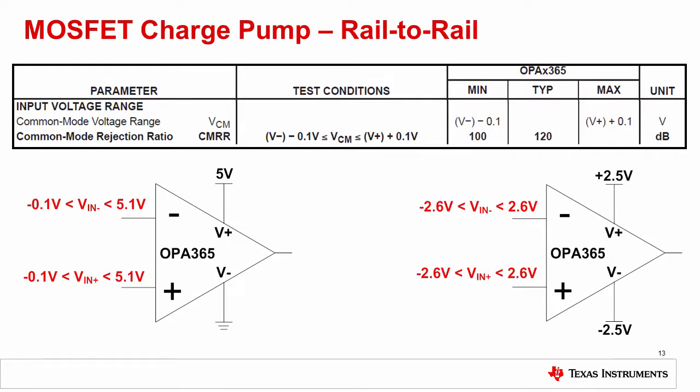Another method for implementing a rail-to-rail amplifier is to use an internal charge pump. The main advantage of the charge pump is that the amplifier will no longer have crossover distortion because only one differential input pair is present. The linear input voltage range of the device shown, the OPA365, extends 100 millivolts past each supply rail.